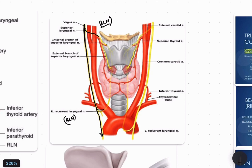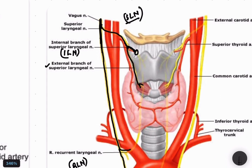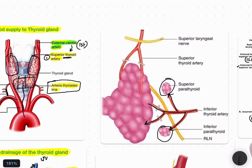The superior laryngeal nerve divides into an external branch and an internal branch. The internal branch pierces the thyrohyoid membrane — a membrane attaching the thyroid to the hyoid — and goes inside. The external branch comes down along the course of the superior thyroid artery.